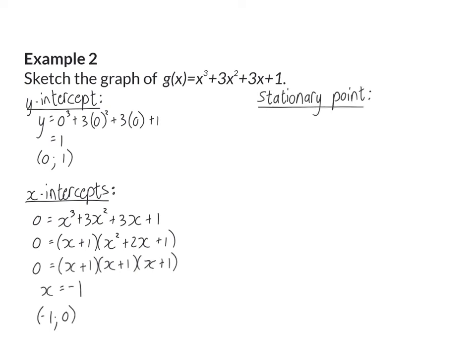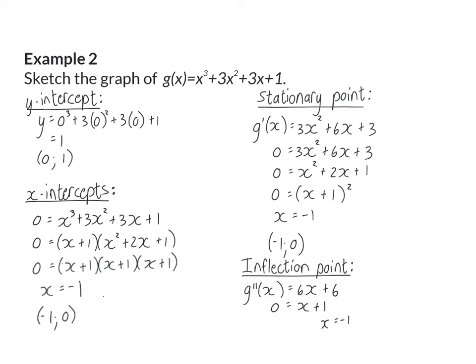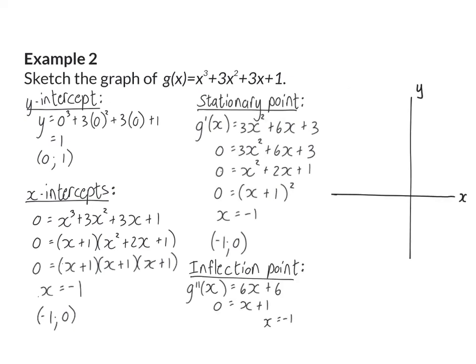Now we can determine our stationary points by getting the derivative and putting it equal to zero. When you factorize you will see that the stationary point is also at (-1, 0). As soon as a cubic function has only one stationary point, that stationary point will also be the inflection point, so the following steps are not necessary.